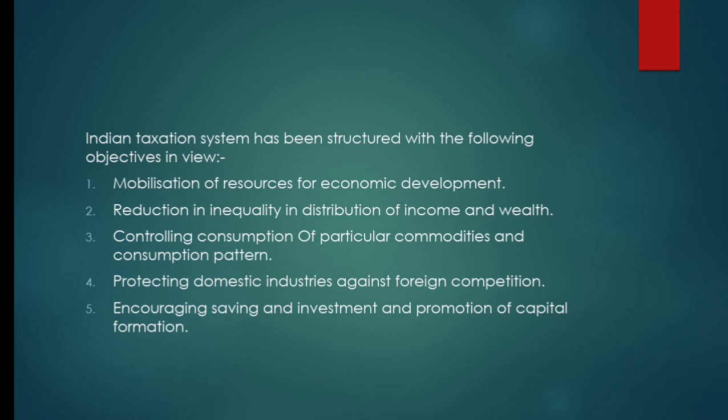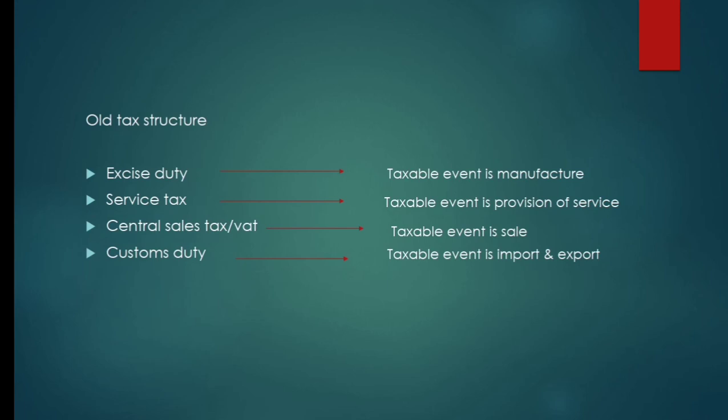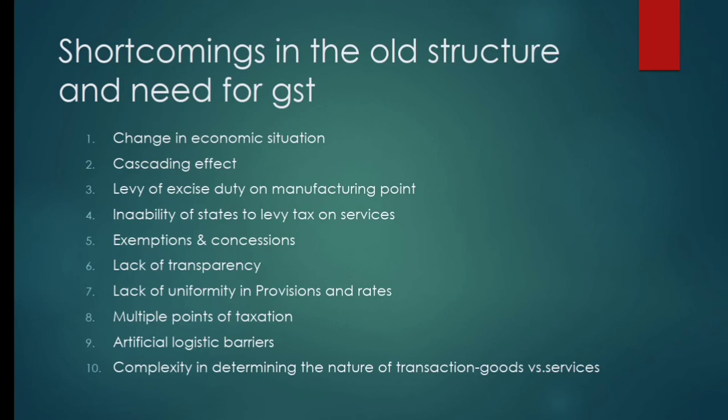In the old tax structure, there were four types of taxes. First, excise duty — its taxable event was manufacturing; a manufacturer had to pay tax at the time of manufacturing. Second, service tax — leviable on services of any kind like hotel services, banking services, and insurance services. Third, central sales tax (CST) — payable on any interstate sale, and VAT (value added tax) — payable on intrastate transactions. Fourth, customs duty — its taxable event is import and export; the tax paid at the time of import/export is called customs duty.